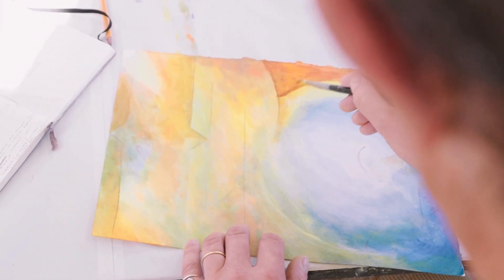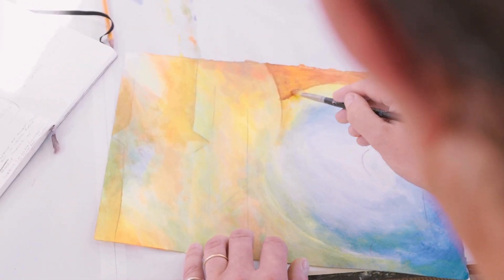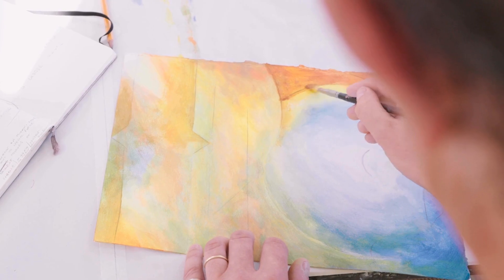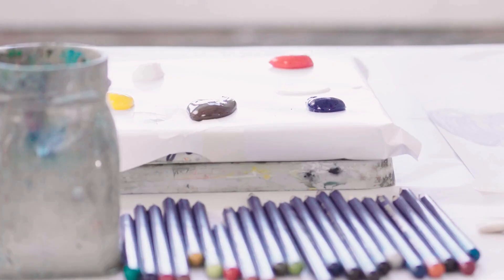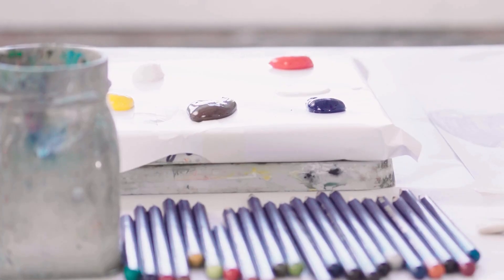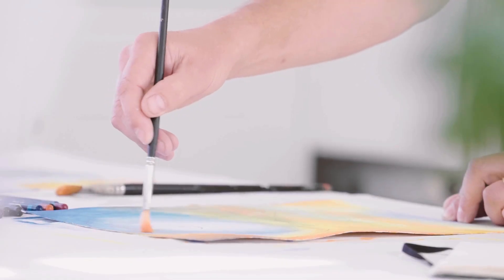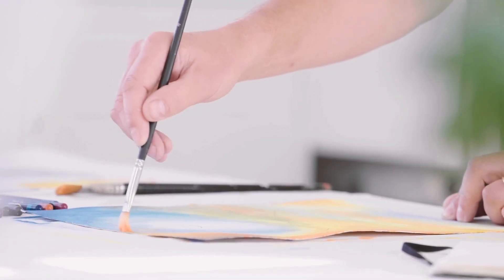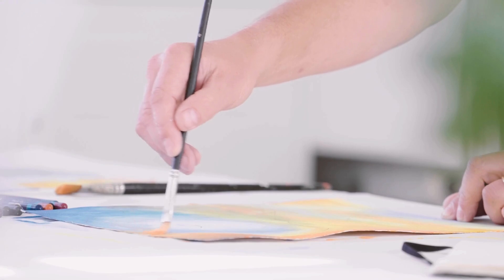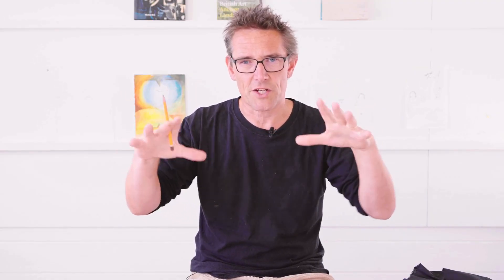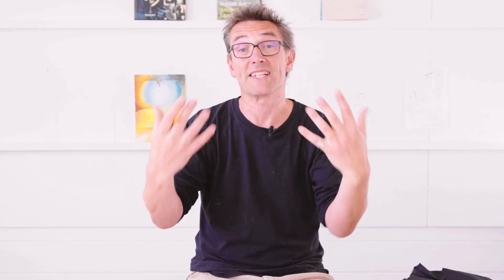There's a way we can use acrylics where we start off with them very thin, incorporate glaze medium into the acrylics, and then build up layers of different colour to produce a picture. We can start off very loose and gradually tighten that picture up as the painting develops.